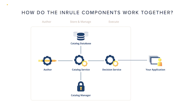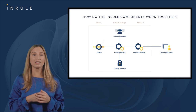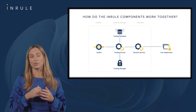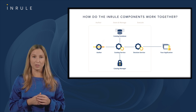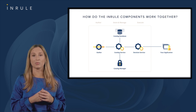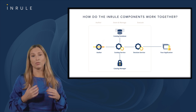So how do the Enrol components work together? Rules are authored in IR Author, our desktop client, or in our web client, Author Studio. When you have configured your rules, you check in your rule application to the catalog, and to make changes you check it back out. The catalog service has a catalog database, which acts as your organization's single source of truth — this is where all rule artifacts are stored. We also have a catalog manager component, used to manage and administrate rule applications, roles, and users, and it can also be used to view changes.